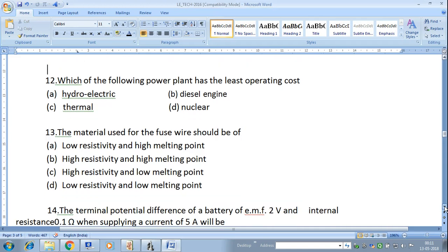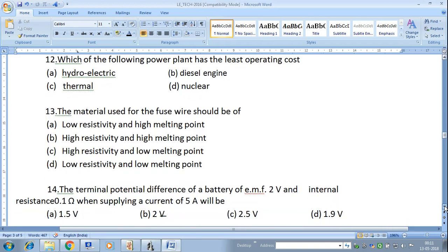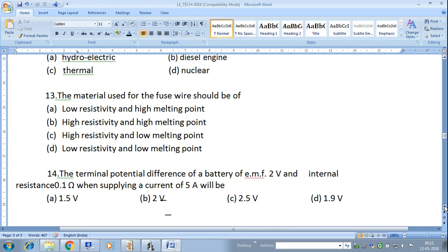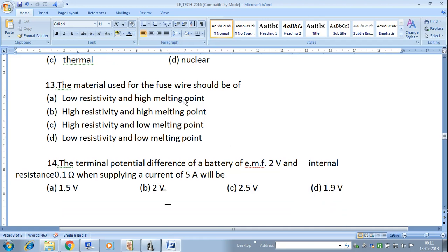Next question: The material used for fuse wire should be of low resistivity and high melting point. The correct answer is low resistivity and low melting point.